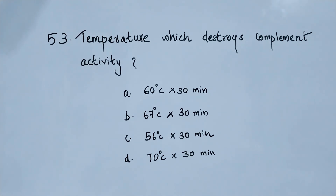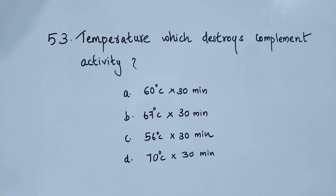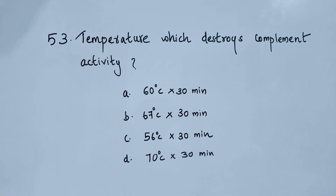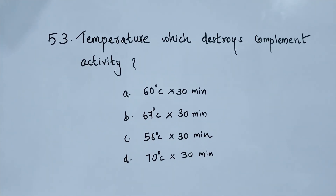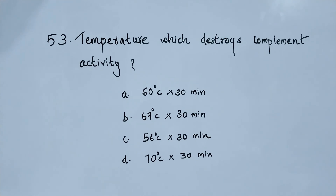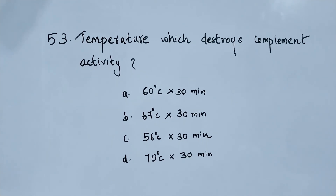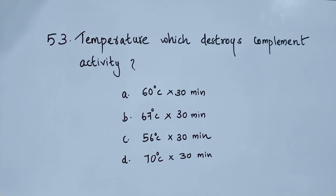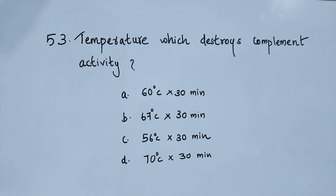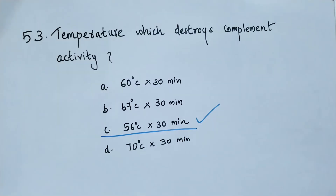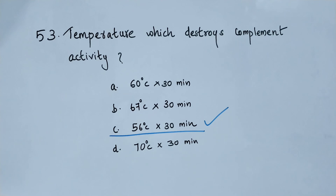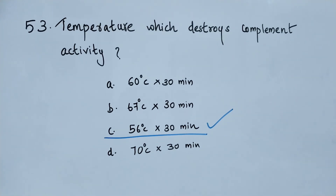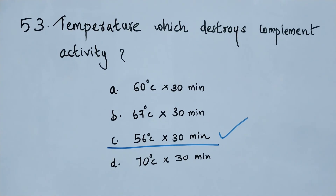Question number 53. Temperature which destroys complement activity: option A 60 degree Celsius for 30 minutes, option B 67 degree Celsius for 30 minutes, option C 56 degree Celsius for 30 minutes, option D 70 degree Celsius for 30 minutes. The right answer is option C. 56 degree Celsius for 30 minutes will destroy complement activity.